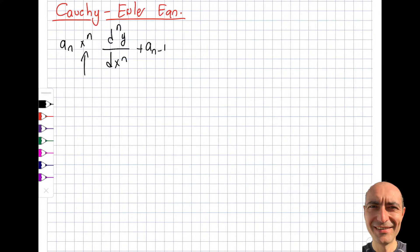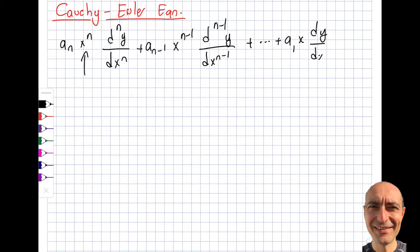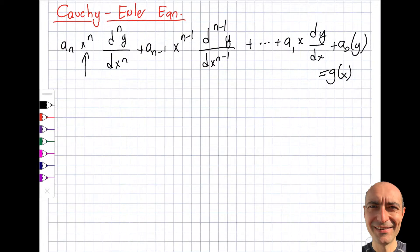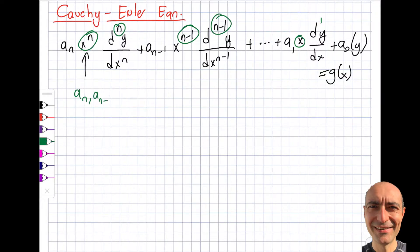Let's write the special form and talk about what makes it special. Looking at the general nth-order form, we have terms going all the way down to a1·x·(dy/dx) + a0·y = g(x). First, is this linear? Yes, it is linear. What is special is that the power of x matches the order of the derivative — that is the special property of the Cauchy-Euler equation. Also note that a_n, a_{n-1}, etc., are all constants.